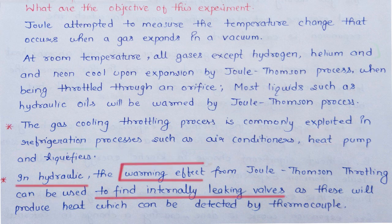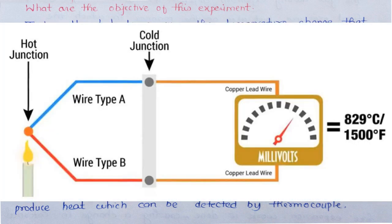Hydraulics में warming effect का इस्तेमाल gas wall के अंदर internal leakage को detect करने के लिए किया जाता है। Hydraulics के अंदर जब भी कोई internal valve leak करता है तो वहाँ से liquid flow करता है बाहर की तरफ, जिसकी वजह से उस liquid का temperature increase हो जाता है। इसी वजह से हम thermocouples के द्वारा उसको detect कर सकते हैं।